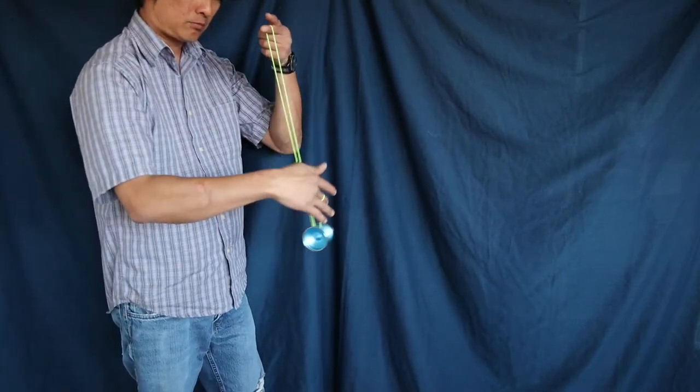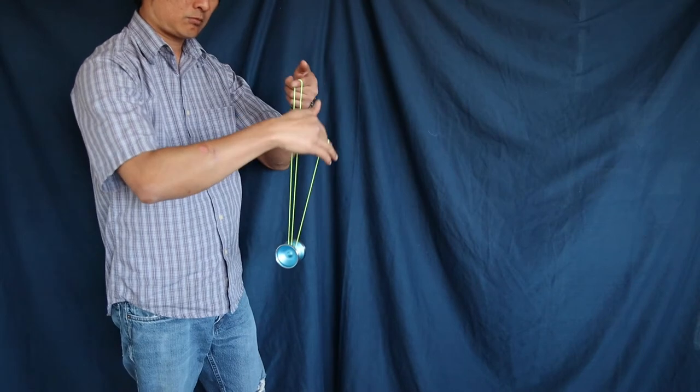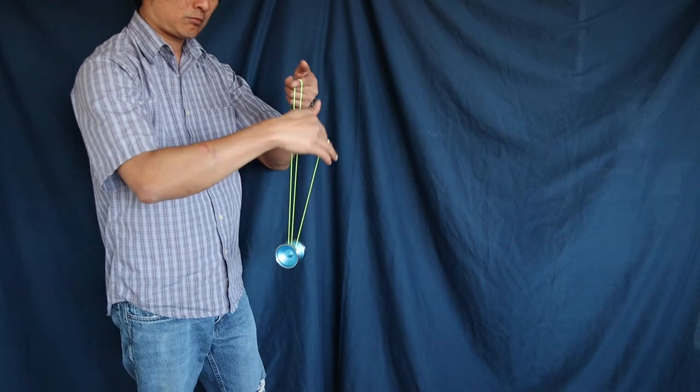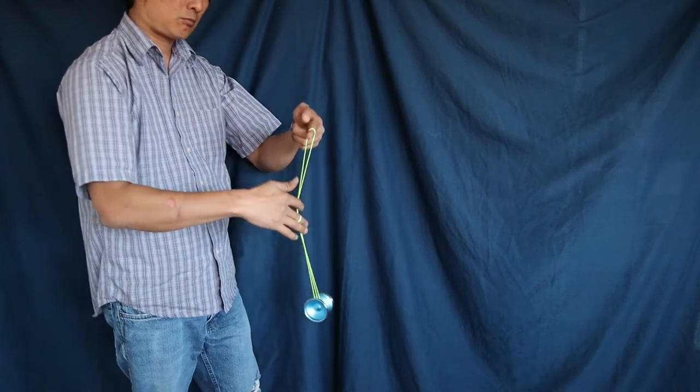So you'll start this trick like how you'll start a brain twister with an undermount. So this version of the undermount is the simple version of doing the brain twister. You could do it in various different mounts. I'll show the other one. So you'll begin your trick with doing a few brain twisters.